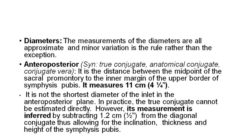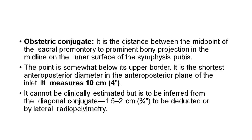However, its measurement is inferred by subtracting 1.2 cm from the diagonal conjugate, allowing for the inclination, thickness, and height of the symphysis pubis. The obstetric conjugate is the distance between the midpoint of the sacral promontory to the prominent bony projection in the midline of the inner surface of the symphysis pubis — a point somewhat below the upper border. It is the shortest anteroposterior diameter in the anteroposterior plane of the inlet and measures 10 cm.